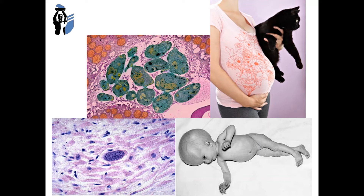The asymptomatic carrier form is more common than chronic and acute toxoplasmosis. With transplacental infection, there is congenital toxoplasmosis.